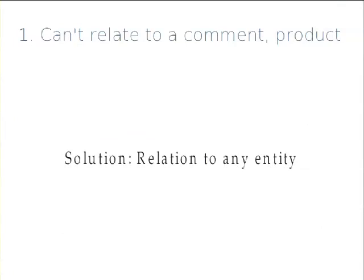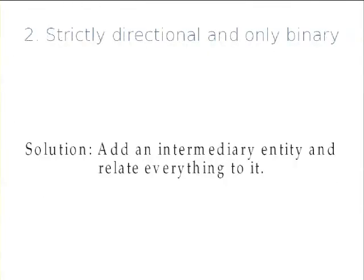The solution to the first problem is that we have a more generalized framework so that you can relate to any entity at all — comments, commerce products, and any custom entity should work without any problems. For the second problem, since you attach a field to the source, you would have to have a similar field on the target if you wanted to relate backwards as well. The solution is that we add an intermediate entity. The Relation module defines an entity called relation, and then you relate everything to this relation entity instead of directly relating the entities to each other.